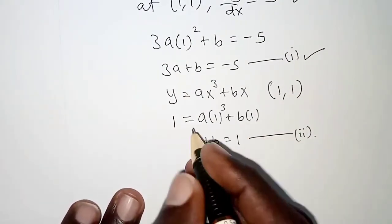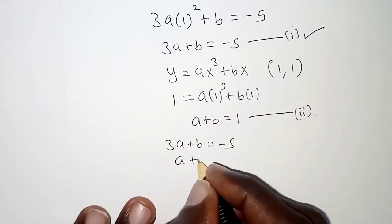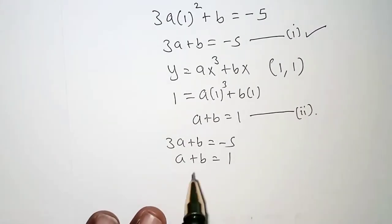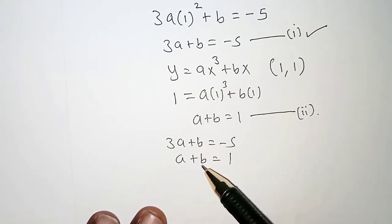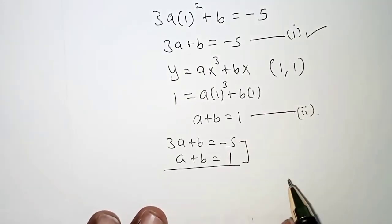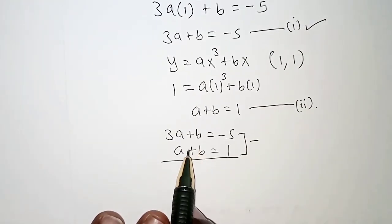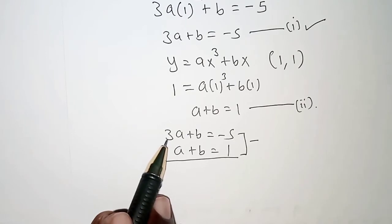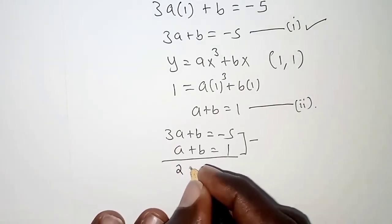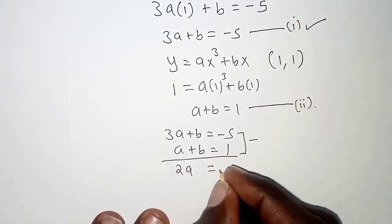Now we solve the two simultaneous equations together. We have 3a plus b equals negative 5, and we also have a plus b equals 1. Both equations have a positive b term, so we subtract to eliminate b. We get 3a minus a equals 2a on the left, and negative 5 minus 1 equals negative 6 on the right.